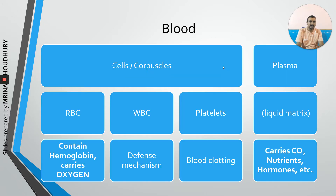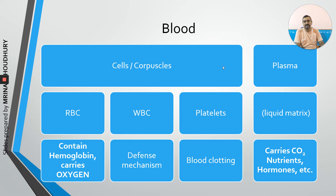You have studied blood components in class 9, but here is a fast revision. Blood mainly has two components: the various cells present in it and the liquid matrix called plasma. The cells are of three types: RBCs, WBCs, and platelets.